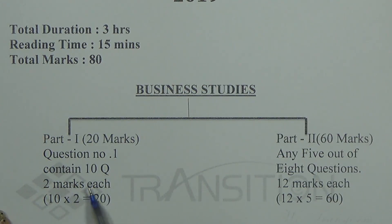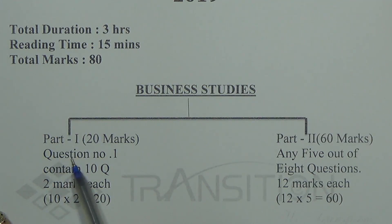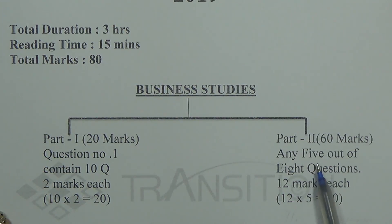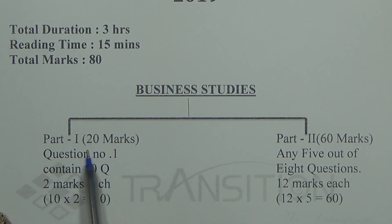Each question in Part 1 carries 2 marks, so 10 into 2 equals 20 — that is your total for Part 1. In Part 2, which is 60 marks, you have 8 questions in total but you only need to attempt 5, giving you 3 extra options. Each question carries 12 marks, so 12 into 5 equals 60. So your 80-mark paper consists of 20 marks for short questions and 60 marks for long questions.